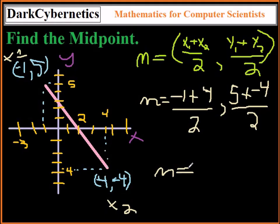So m is equal to what? For this first number, we add a negative 1 to 4 and we get a 3 as a value for the x value. And we divide that number by 2, so we get 1 and 1 half.